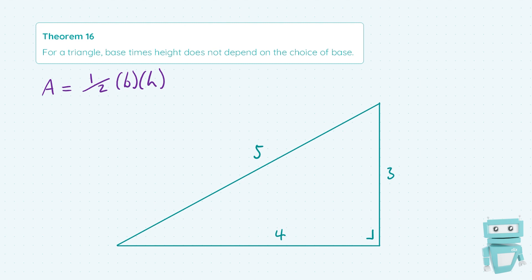To find the area, we choose one side to be the base. In this case I'm going to choose the bottom side, which is 4. The height is very obvious because we have a right angle triangle — the height here is 3. So our area is a half times 4 times 3. Multiplying the half into the 4 gives us 2, so our answer is 2 times 3, which equals 6. That is our area, and now we'll move on to the same triangle from a different perspective.